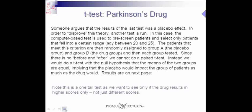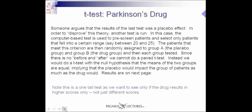Let's say someone argues that the result of the last test was a placebo effect. In order to disprove this theory, another test is run. We use a computer-based test to pre-scan patients and select only patients that fall into a certain range, say between 20 and 25. Then the patients that meet this criteria are randomly assigned to group A, the placebo group, and group B, the drug group. We find patients in the range of 20 to 25, randomly distribute them into group A and group B — A gets the placebo and B gets the drug.